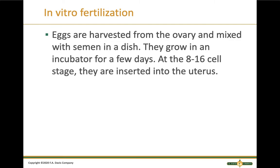We need to know about in vitro fertilization. If people are having trouble getting pregnant, they might do IVF, where eggs are harvested from the ovary and mixed with semen in a dish — 'in vitro' means in glass, though it's probably a plastic dish now. The embryos grow in an incubator, and around the 8 to 16 cell stage they pick the best ones and insert them into the uterus. They usually pick more than one to improve chances, which is why IVF often results in twins or triplets. The success rate is only about 20 percent.